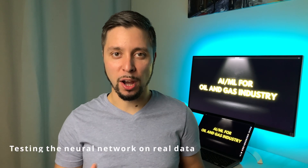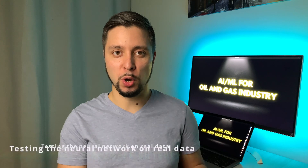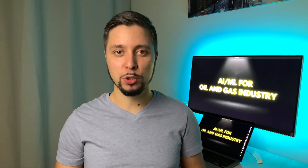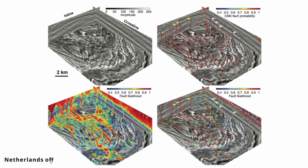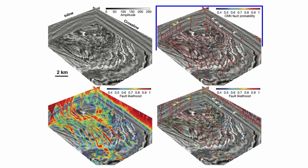It's interesting to see how a neural network trained on a purely synthetic data set is able to delineate faults on real seismic images. The first test uses the Netherlands offshore F3 seismic data set. Although trained only on synthetic data, the network works pretty well, providing a clean and accurate fault prediction. Traditional methods like fault likelihood work fine to highlight faults, but the image is a lot noisier.